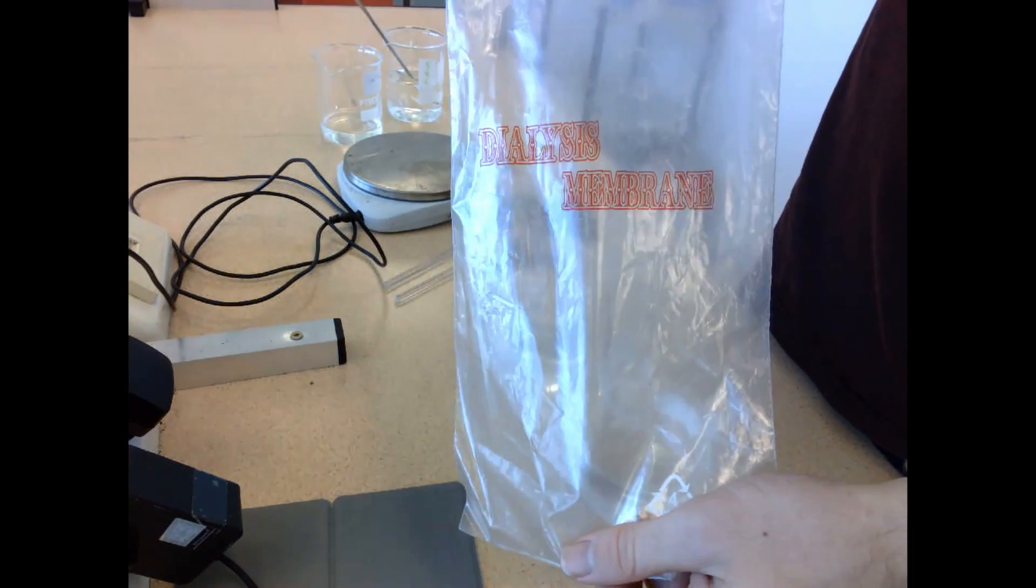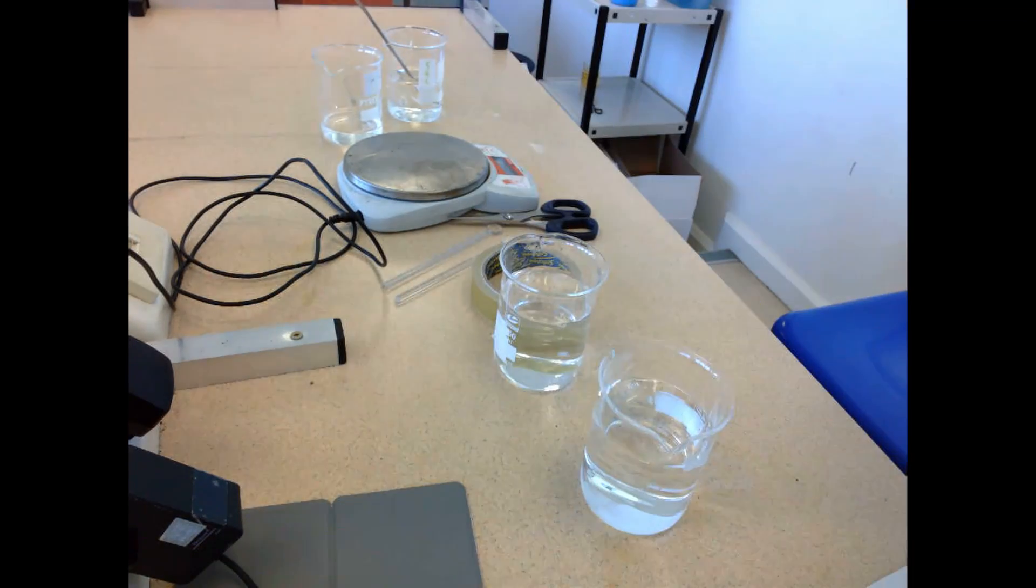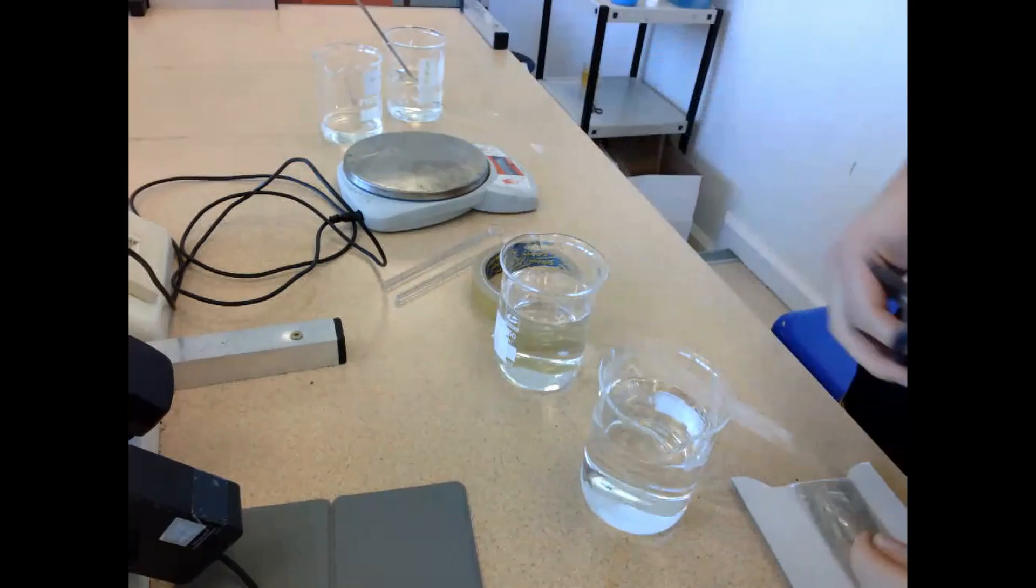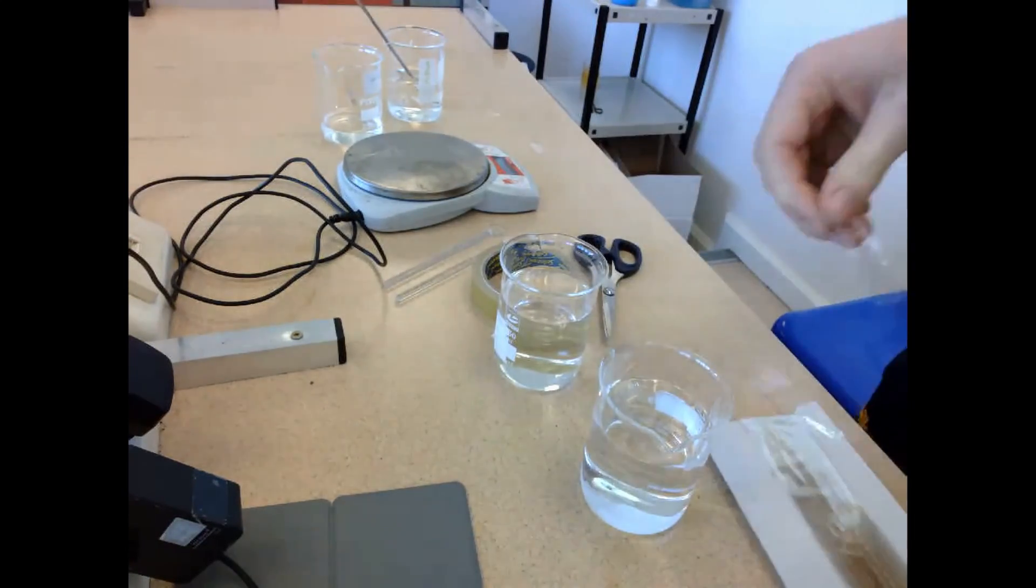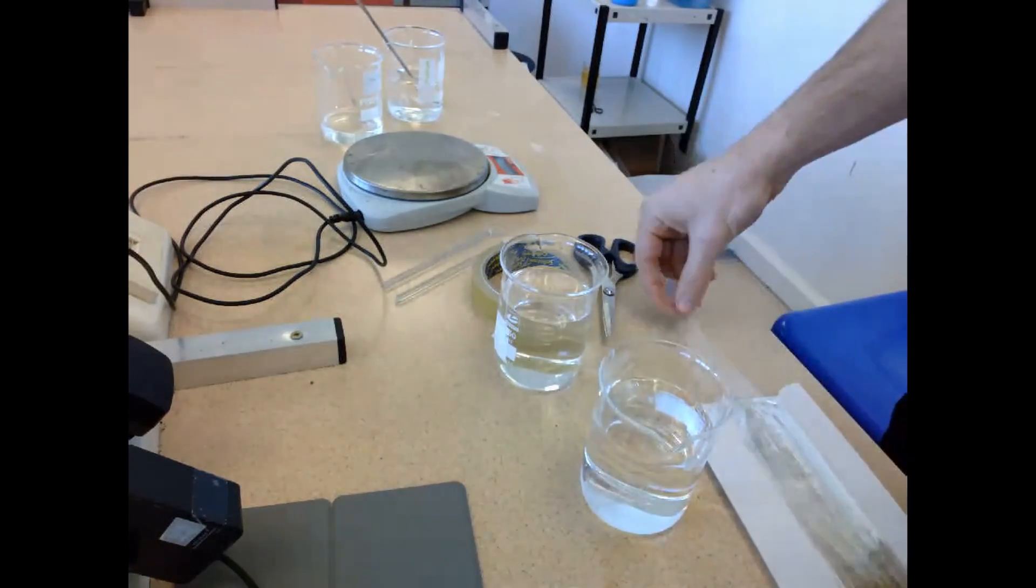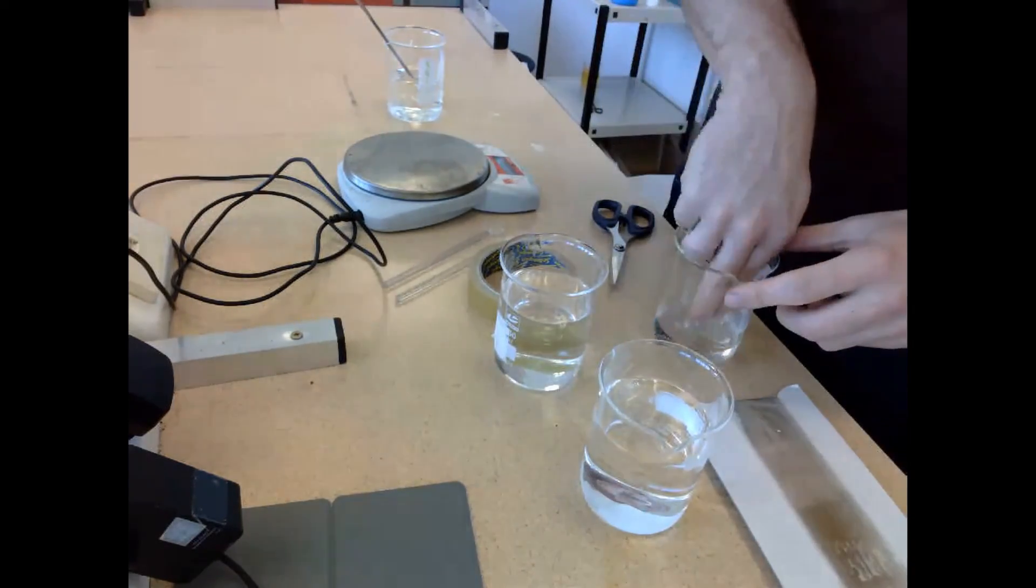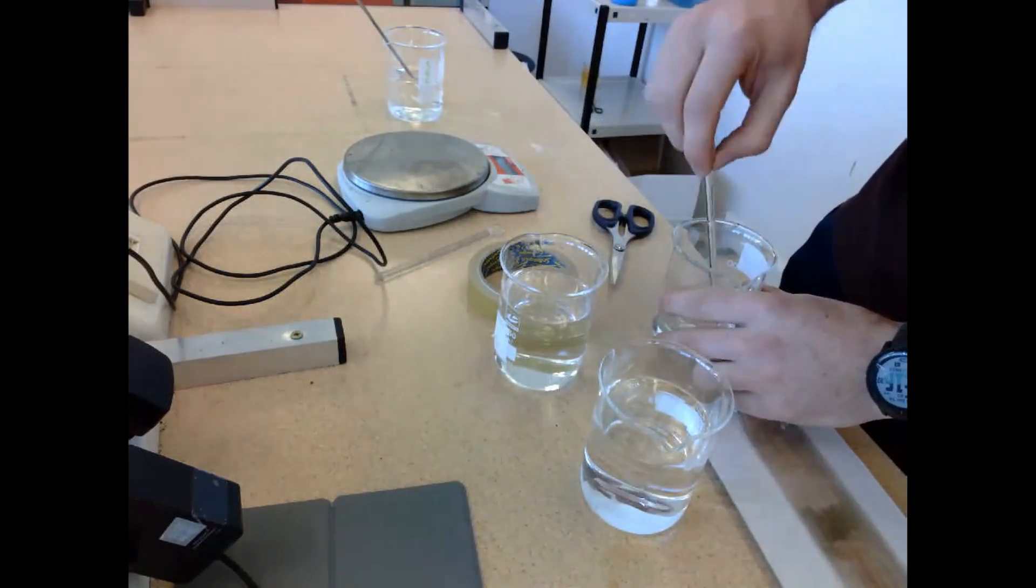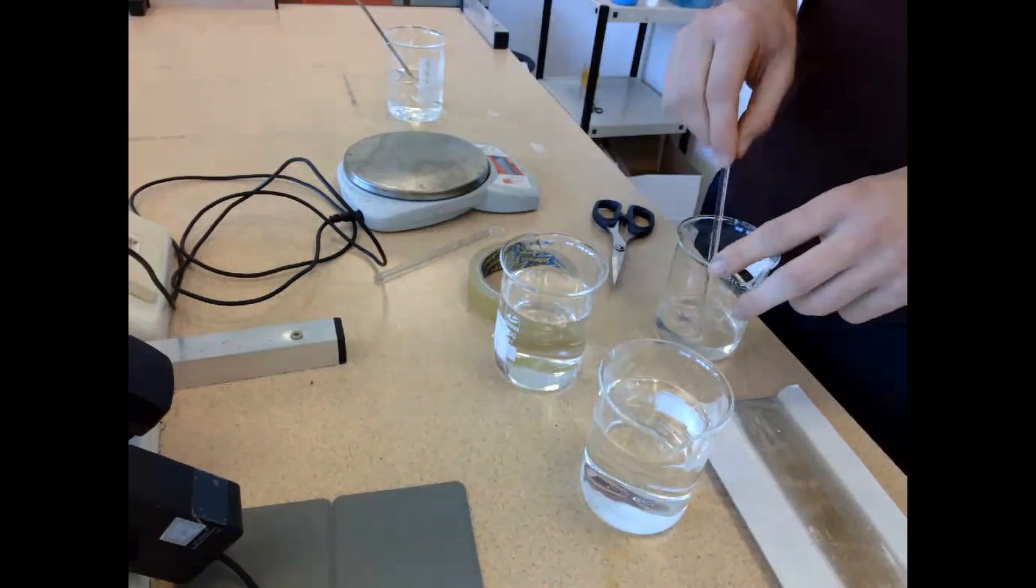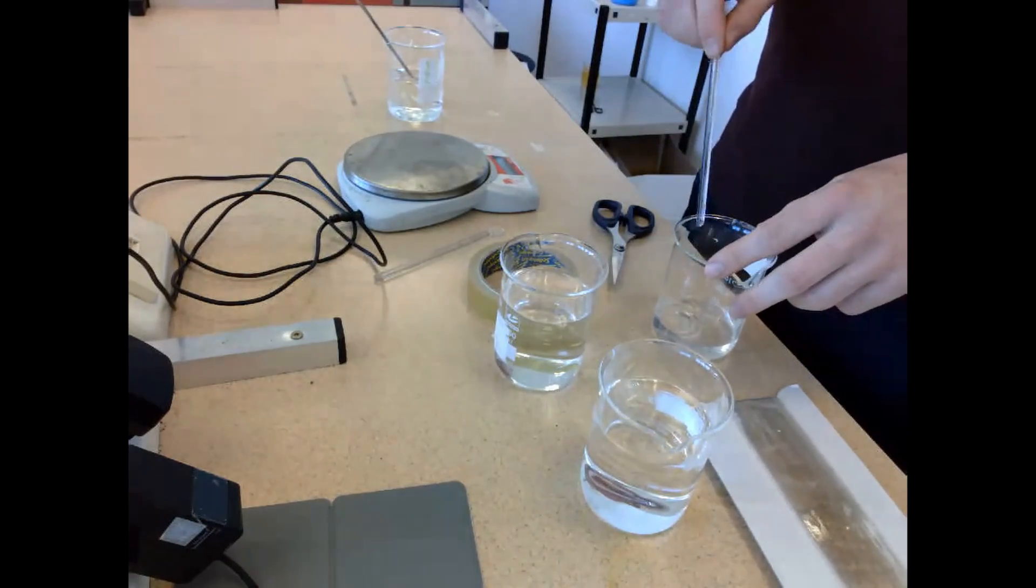This experiment is going to be focused on osmosis and we're going to use visking tubing to carry out this process. Now you can see there it's called dialysis membrane, but we just refer to it as visking tubing. Don't forget, osmosis is the movement of water from an area of high concentration to an area of low concentration across a semi-permeable membrane, and the visking tubing is this semi-permeable membrane.